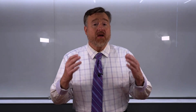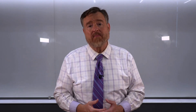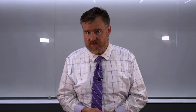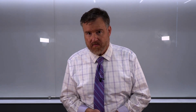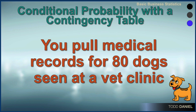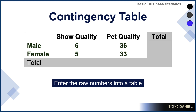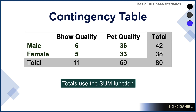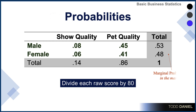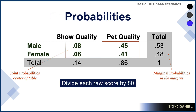Here's another example of conditional probability, this time using a contingency table. You pull medical records for 80 dogs seen at a vet clinic. Some of these dogs are male, others are female, some are pet quality, others are show quality. We will create a contingency table and I will show you, using Excel, how to calculate conditional probability.